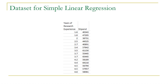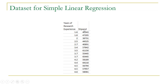As we know, simple linear regression can be used to predict a continuous or real value. We can use simple linear regression to predict the stipend of a research scholar based on his or her research experience. Let us consider this dataset. Here we have two attributes: the first attribute indicates years of research experience of a research scholar, and the second attribute corresponds to stipend. We have to decide the stipend of a research scholar based on his or her experience.